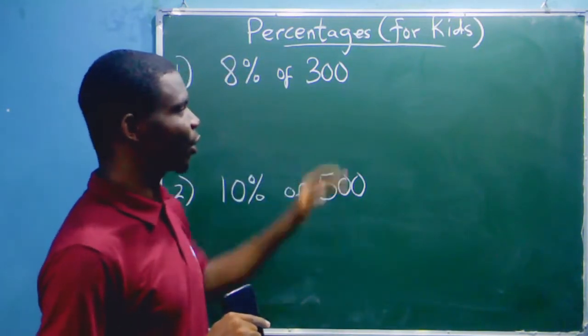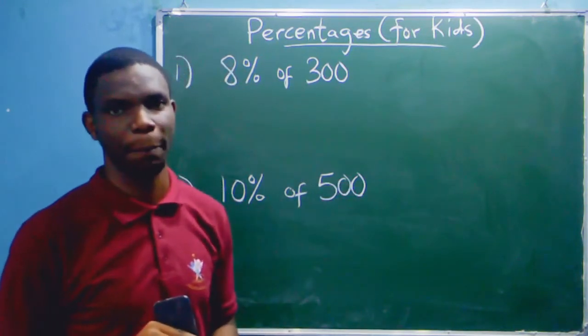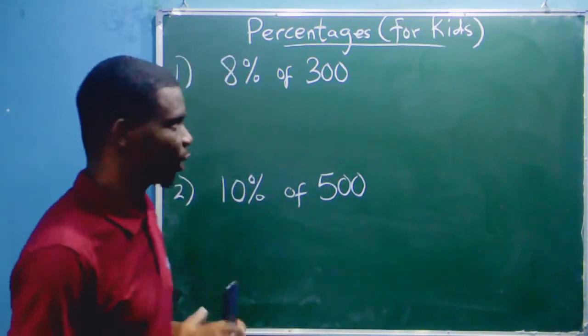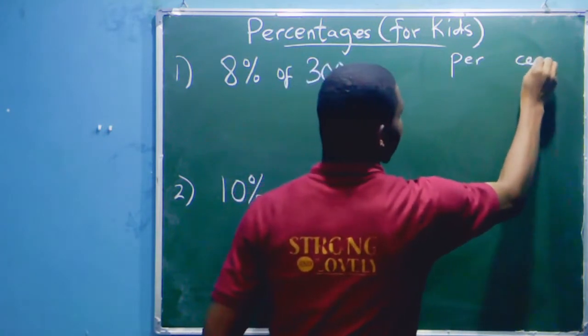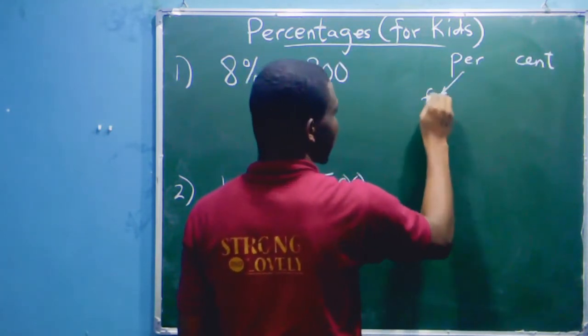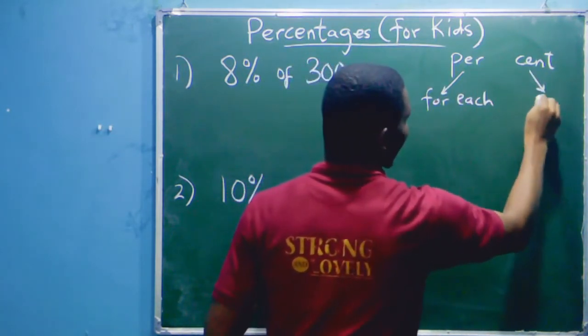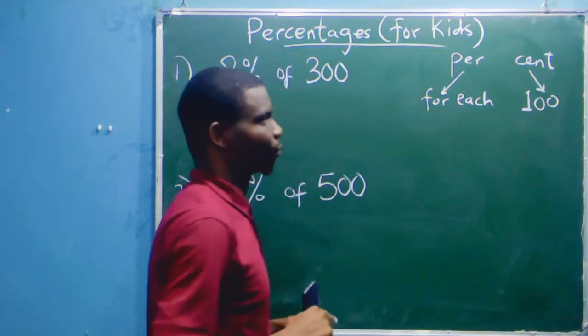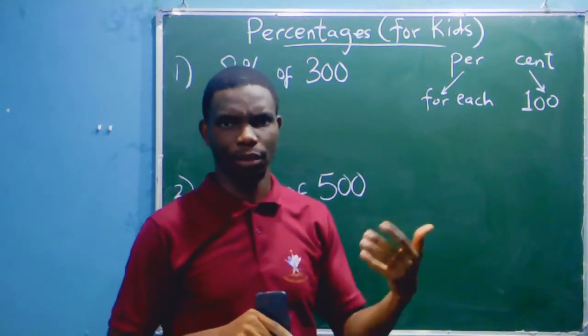8% of 300? And what is 10% of 500? Now when you hear the word percent, it can be broken down into two words: per and cent. Per means for each, and cent means hundred. For each hundred - that is the meaning of percent.